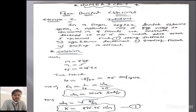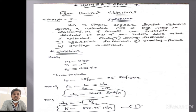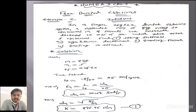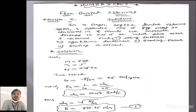Moving towards the solution. First we write the given data: mass m = 8 kg, number of oscillations = 30 in 18 seconds, and after 5 oscillations the amplitude decreases to 0.25, so x5 = 0.25 × x0. Now since 30 oscillations occur in 18 seconds, we can directly find the time period: Tp = 18/30 = 0.6 seconds per cycle.